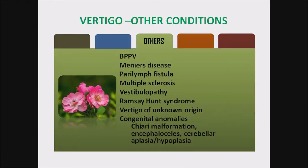Other conditions are very rarely seen in children: BPPV, Meniere's disease, perilymph fistula, multiple sclerosis, vestibulopathy, Ramsay Hunt syndrome, vertigo of unknown origin, and congenital anomalies — commonly seen are Chiari malformation, encephalocele, cerebellar aplasia, and hypoplasia.